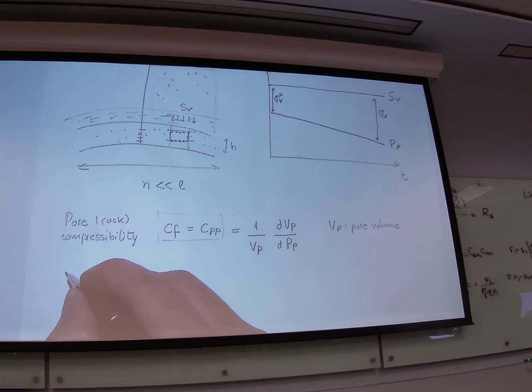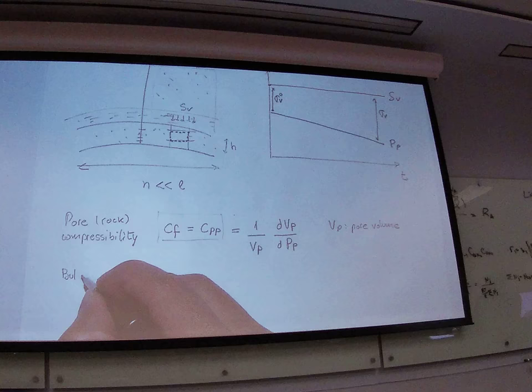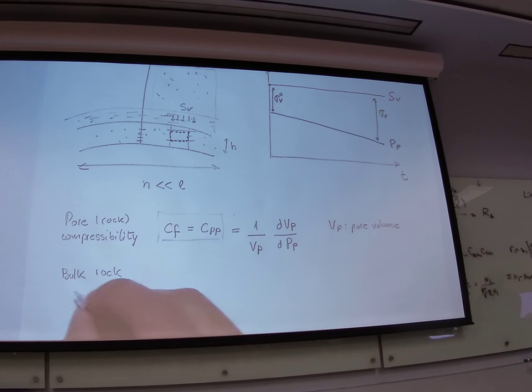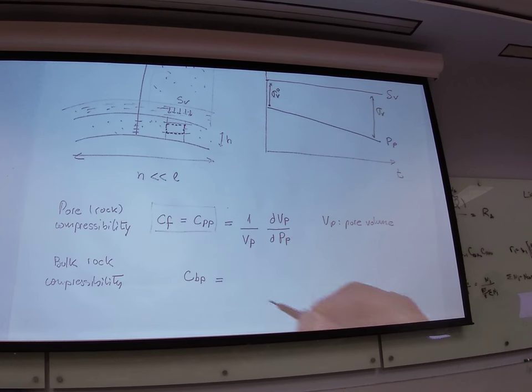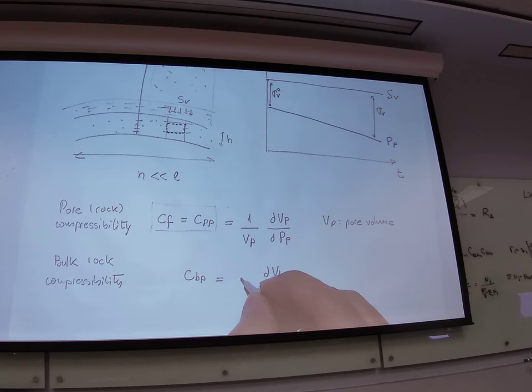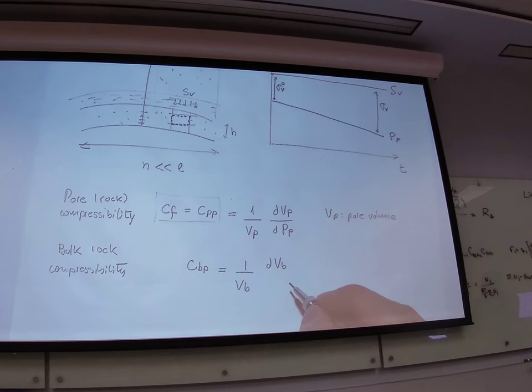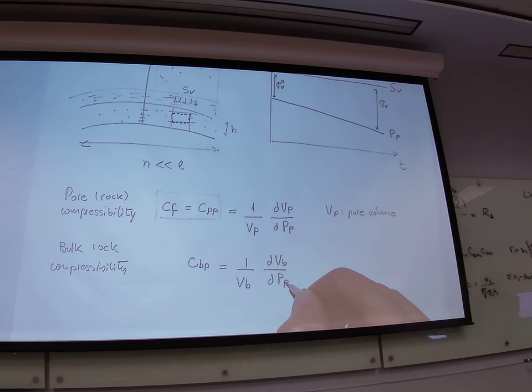But before we do that, let's use another definition, which is the bulk rock compressibility. And that value goes by CBP. It's not CPP, it's CBP. B from bulk. And it's defined as the change in bulk volume, percentual change again, that's why it's divided by the original bulk volume, due to a change in pore pressure.